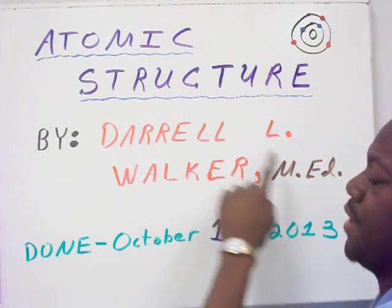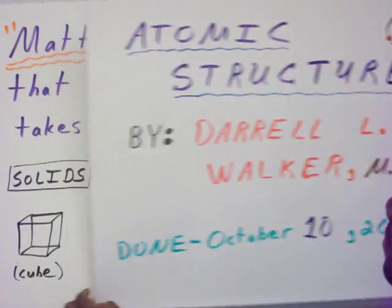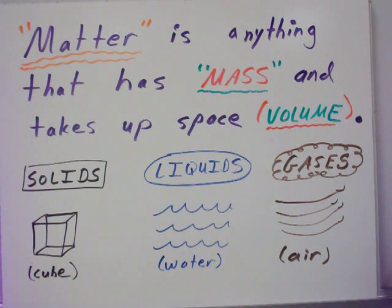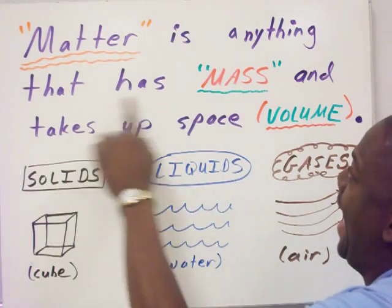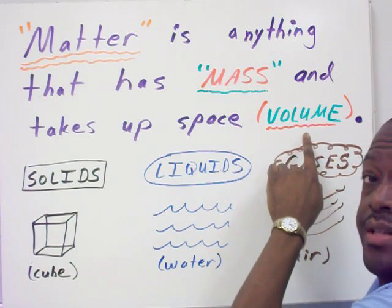Atomic Structure by Daryl L. Walker. Matter is anything that has mass and takes up space, which is also known as volume.